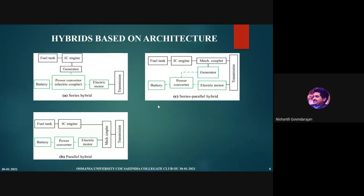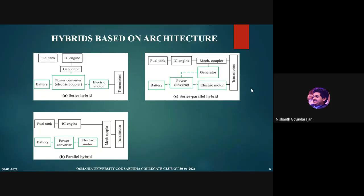The next architecture is a series-parallel hybrid. This is where things start getting complex. You have the IC engine fueled by petrol or diesel which goes to a mechanical coupler, then the transmission. Or, the IC engine powers the generator, which goes to the power converter, to the battery, which powers the electric motor, then the transmission. You can also bypass the engine — battery to power converter, electric motor, transmission. There are more modes of operation: the engine standalone, battery standalone, or the engine driving the car while also charging the battery, which provides assistance at slow speed.